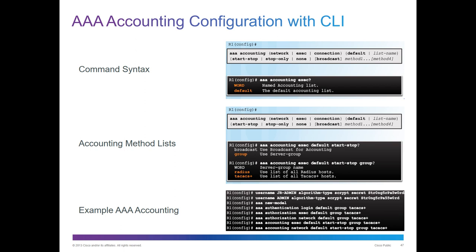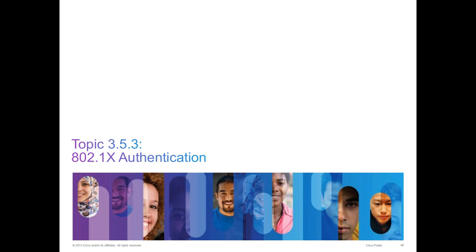Our last major section is 802.1x authentication. A lot of network admins say they prefer wireless because they can make everyone sign in and track traffic based off the account being used. Well, on a wired LAN, you can do the same thing — via 802.1x authentication. So in order to gain access to a port, you have to log in, just like you would with wireless, which also uses 802.1x.